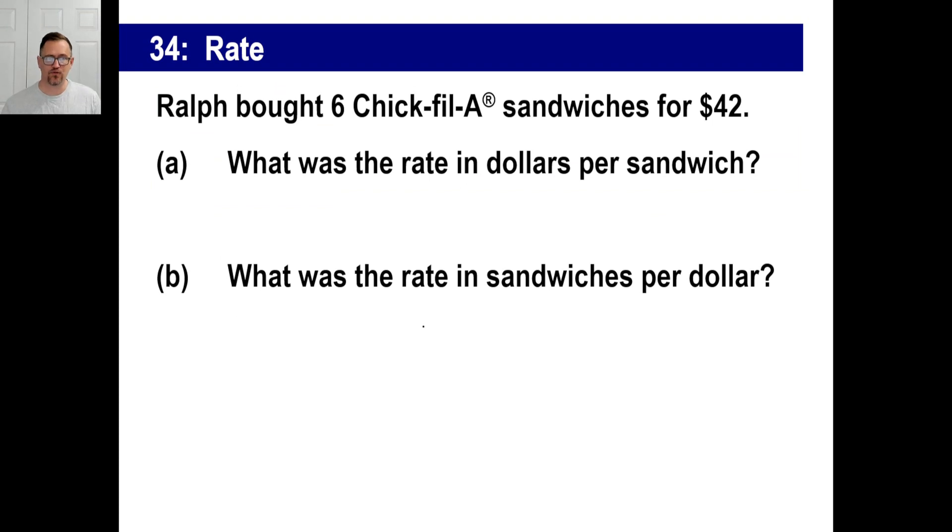Let's take a look at a problem like this. Ralph bought 6 Chick-fil-A, registered trademark, sandwiches for $42. What was the rate in dollars per sandwich? We can do a rate there. Dollars and then sandwich. Well, let's see. It was $42. And we got 6 sandwiches, right? So, we can reduce that. 42 divided by 6 is 7. So, 7 dollars for 1 sandwich, right?